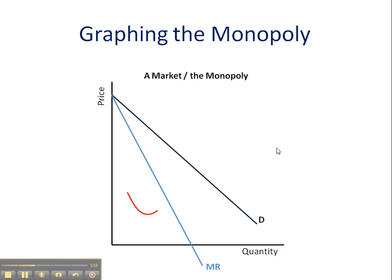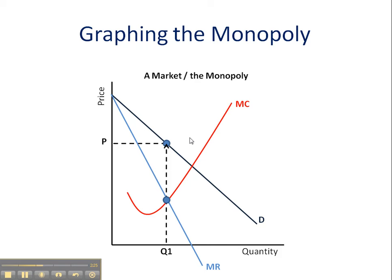Next we need to draw in the firm's marginal cost curve. Just like a perfectly competitive firm, it's a Nike-shaped swoop. We find the profit maximizing rate of output at MC equals MR — that's the point — giving us the level of profit maximizing output at Q1. Here's another mistake people make: they don't go all the way back up to the demand curve to find the market price. You have to do that. Go up to the demand curve and find the market price, establishing it here at P.